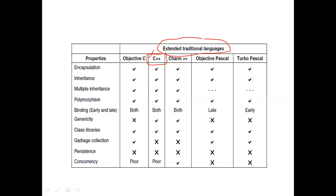C++ supports encapsulation, inheritance, multiple inheritance, polymorphism, early binding, late binding, genericity, libraries, garbage correction, and persistence. C++ is both procedure-oriented and object-oriented — it is not a pure object-oriented language. Python also allows writing programs without classes and objects. But Java is a pure object-oriented language, because without a class you cannot write anything in Java. C language is a pure procedure-oriented language — in C you cannot write classes and objects at all.